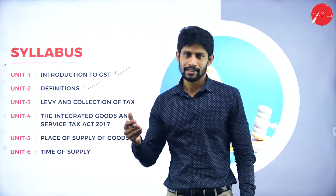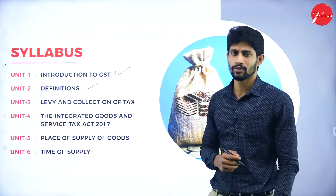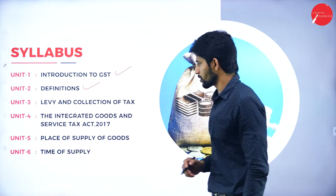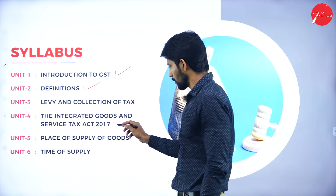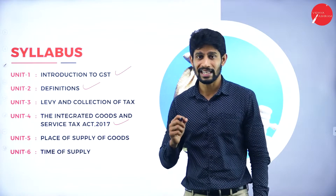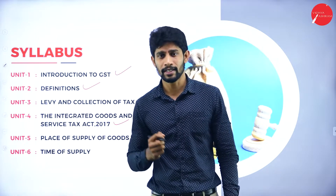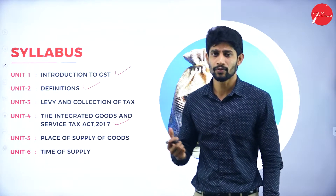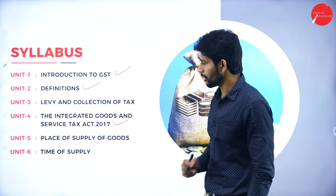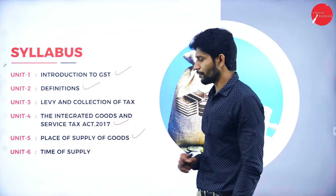Unit number three deals with levy and collection of tax — how we levy the tax and how we collect the tax from the recipient of goods. Unit number four covers the Integrated Goods and Service Tax Act 2017, that is the IGST Act 2017 — what is IGST, what are its components, how we determine the IGST, and how it works with respect to supply.